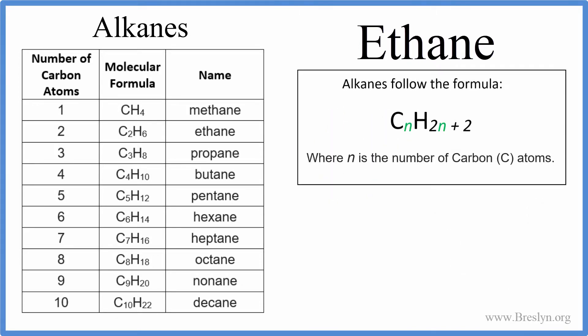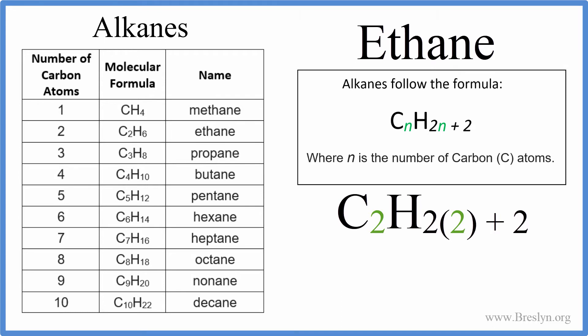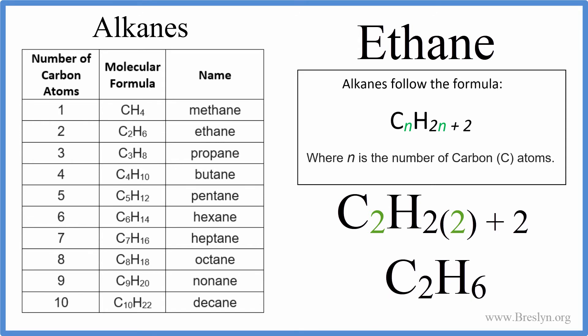If we want to write the formula for ethane and we know it has two carbons, we can use the formula for alkanes: CnH2n+2. For ethane, n equals 2, so we get C2H(2×2+2), which gives us C2H6.